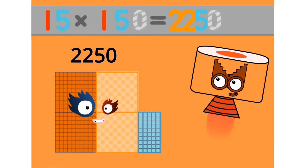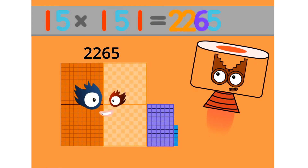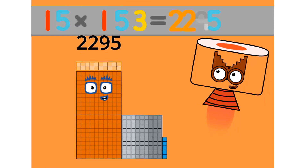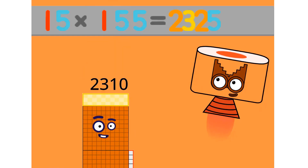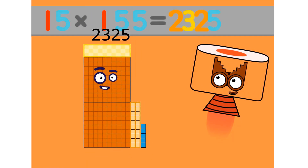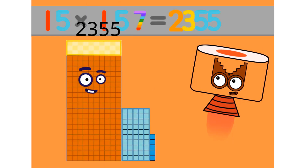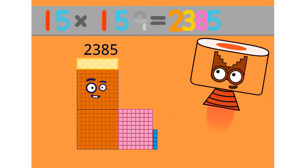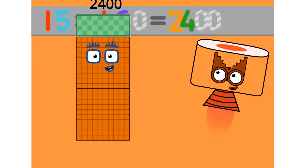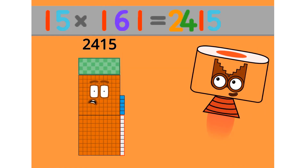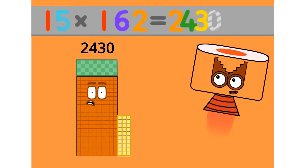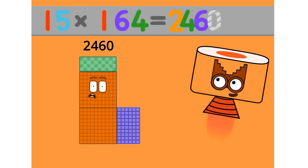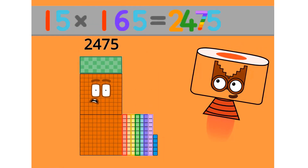15 x 122 equals 1830. 15 x 123 equals 1845. 15 x 124 equals 1860. 15 x 125 equals 1875. 15 x 126 equals 1890. 15 x 127 equals 1905. 15 x 128 equals 1920. 15 x 129 equals 1935. 15 x 130 equals 1950.